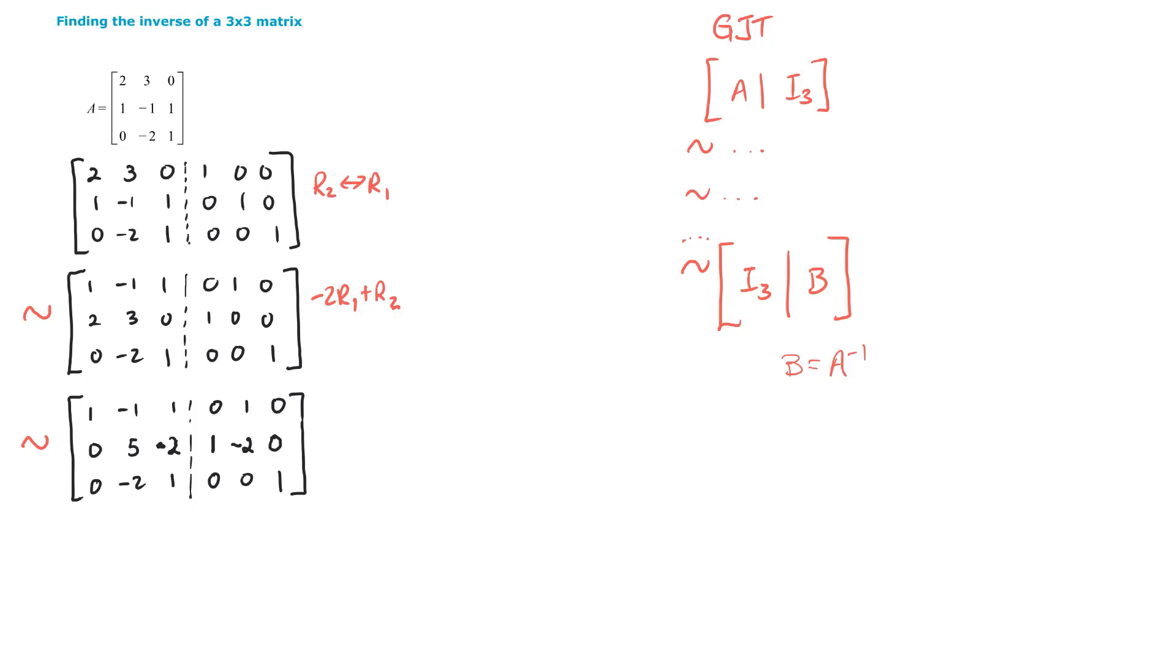Now our goal is to get a leading one in the second row in the middle position. It'll be nice to avoid fractions and to make this a leading one here. It'll be nice to get this to be a 1 and avoid fractions at the same time. So instead of multiplying by 1 fifth row 2, we're going to do an elementary row operation where we can multiply a single row and add it to another row. So I'm going to go 2 times row 3 and add it to row 2.